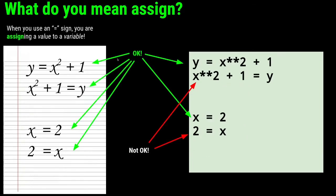The order matters not only from one line to the other, but even within a single line. In math, you could hand in y = x² + 1 or x² + 1 = y and both are fine. But in Python, there's only one way. You can say y = x² + 1, but you cannot write x² + 1 = y. Similarly, x = 2 is valid, but 2 = x is not.